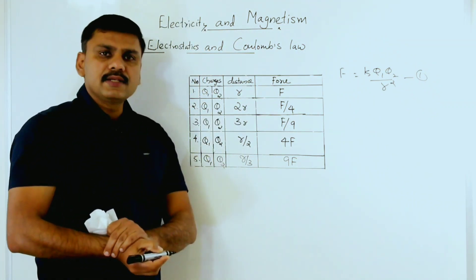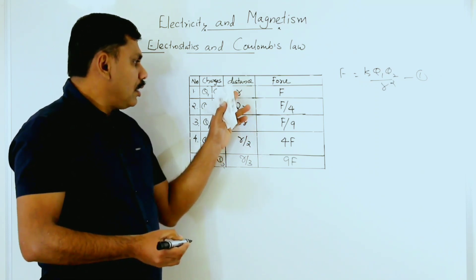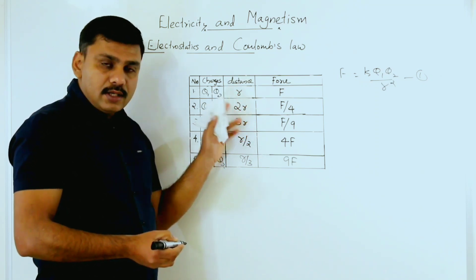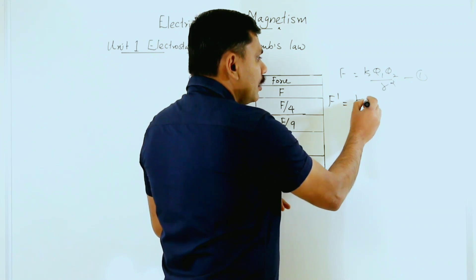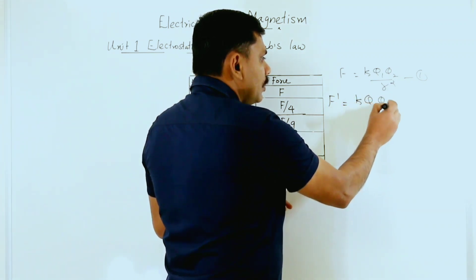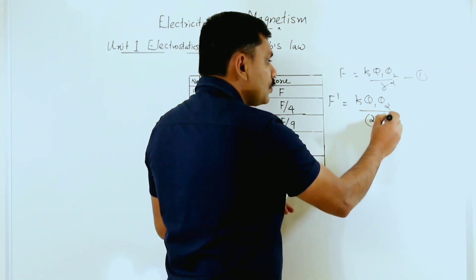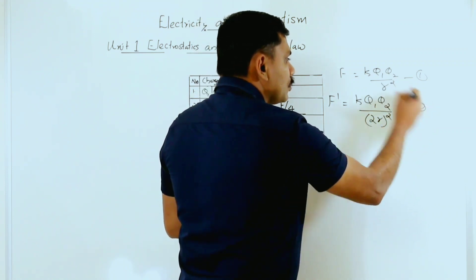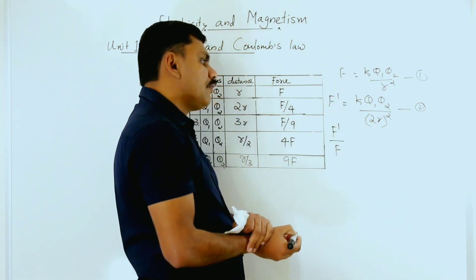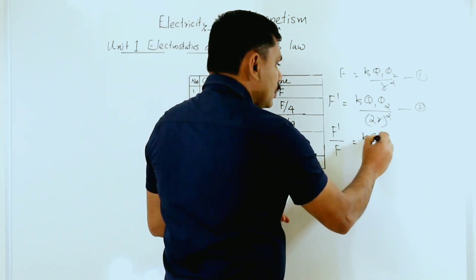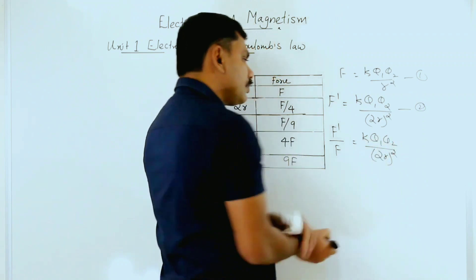In the second case, the charges remain the same but the distance is doubled — that means now the distance is 2r instead of r. So we are finding the new force: F' = k·q1·q2 divided by (2r) squared. That is equation number two. Then we calculate F' divided by F.